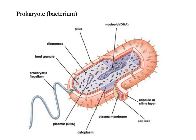Some have a slime capsule around the outside to protect them from things like stomach acid or prevent bacteria from dehydrating and drying out in the soil. They've also got a cell wall. However, it's not made from cellulose — it's made from peptidoglycan or murine.